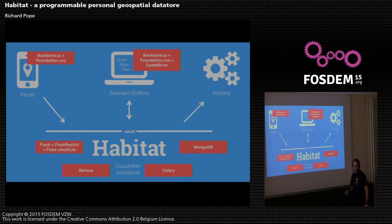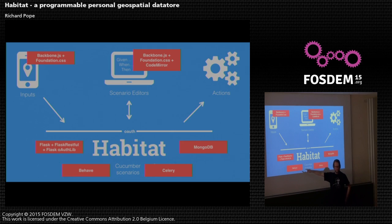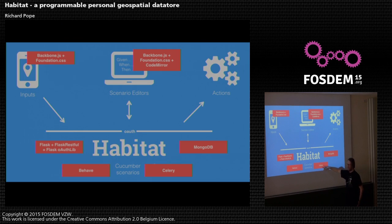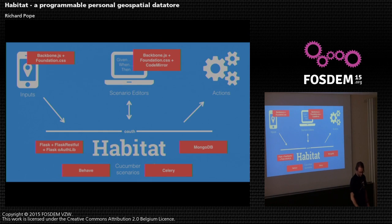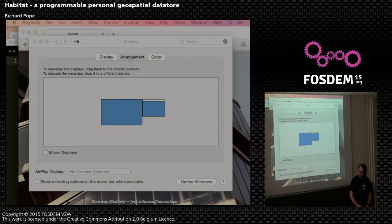The data is stored in MongoDB because that's the easiest thing to throw geodata at — it's not particularly good at complex shapes but it's simple. The cucumber tests are managed by a Python library called Behave. When new data comes into the system it goes through Celery, which is a queuing mechanism — stuff goes in, things happen, and we ping a URL out the other end.